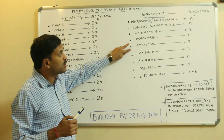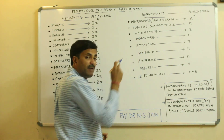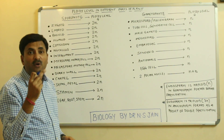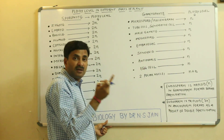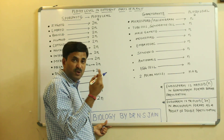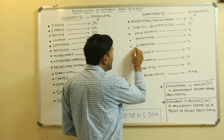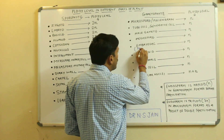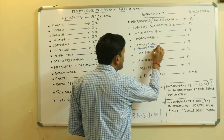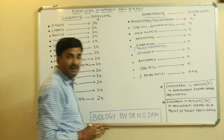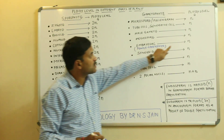Now, embryo sac. The functional megaspore forms the embryo sac. If the megaspore is haploid and it forms the embryo sac, then the embryo sac will also be haploid, and that is why the embryo sac is also called the female gametophyte. So the embryo sac is also N.